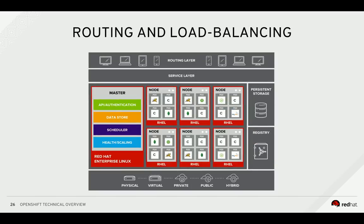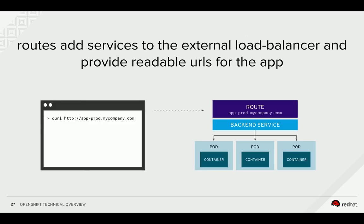Not every consumer of applications exists inside of OpenShift — external clients need to be able to access things running inside the platform as well. The routing layer provides access for external clients to reach applications running on the platform. A router is a separate component that runs HAProxy to assign a readable and accessible URL for external access. Just like a service, the router is capable of load balancing traffic across healthy pods, but the exposed route is externally accessible.